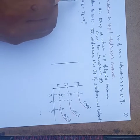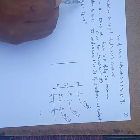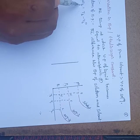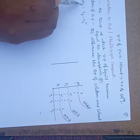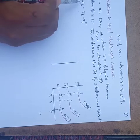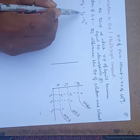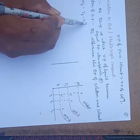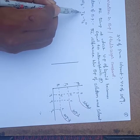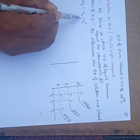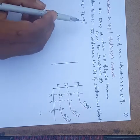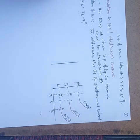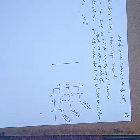Delta Tb is the change in boiling point, where T stands for temperature and B for boiling point. Delta Tb equals Tb minus Tb0, where Tb is the boiling point of the solution and Tb0 is the boiling point of the pure solvent.